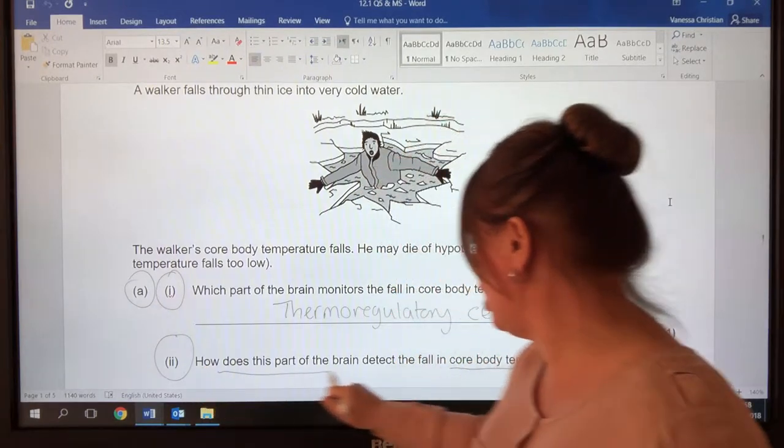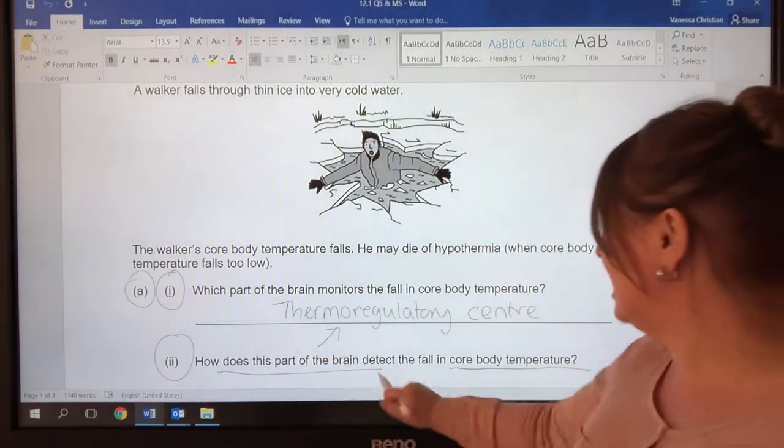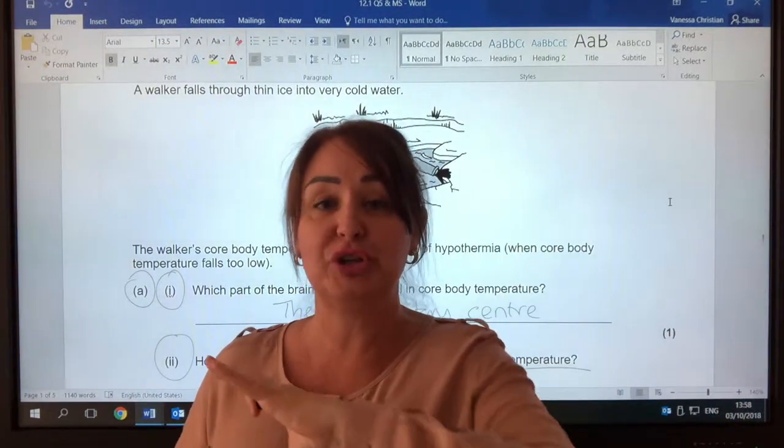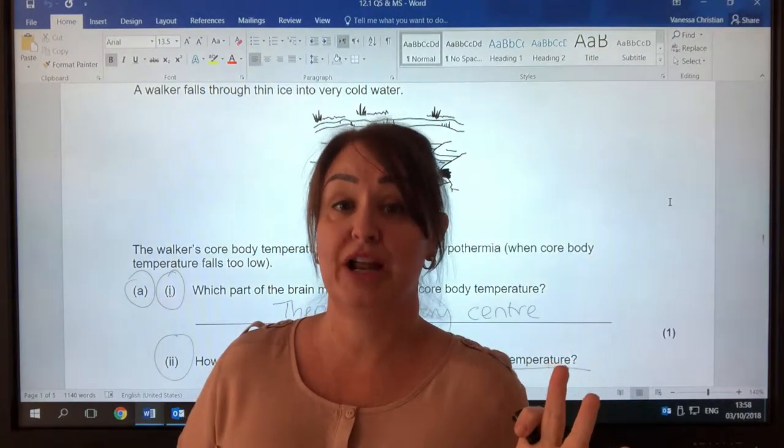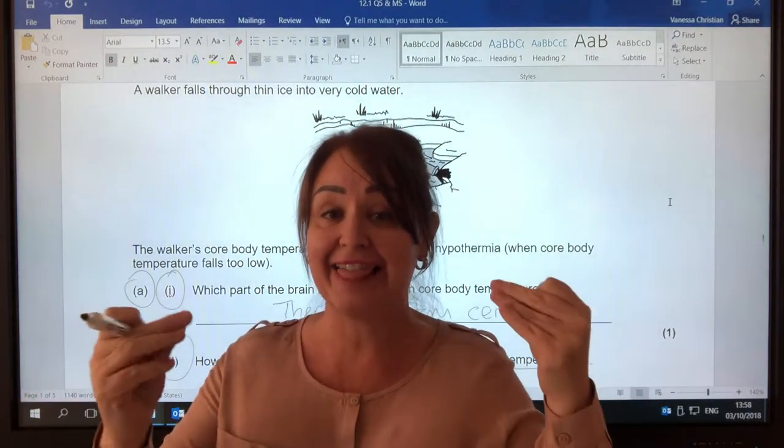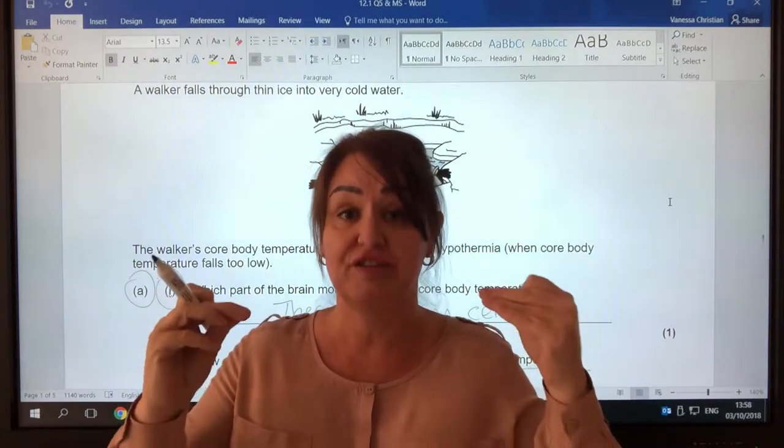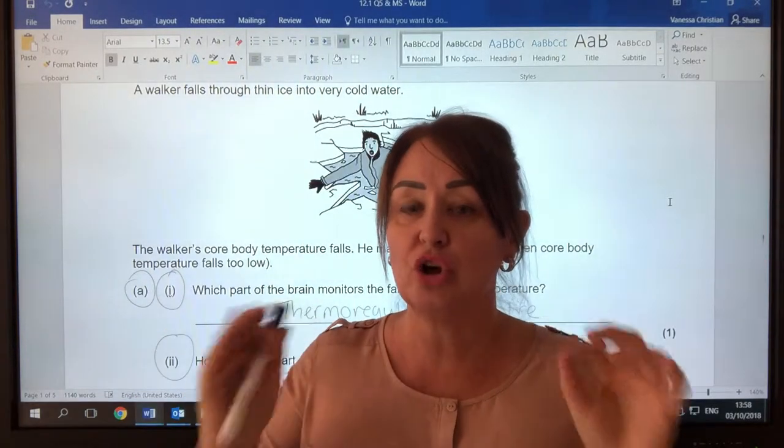So how does this part of the brain, in other words the thermoregulatory centre, detect the fall in core body temperature? As the blood passes through the thermoregulatory centre of the brain, receptors in that thermoregulatory centre detect the fall of temperature of the blood. So a couple of things.